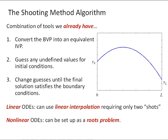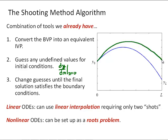Recall that the shooting method algorithm is a combination of tools that we already have. The first step is to convert the boundary value problem into an equivalent initial value problem. Then we're going to guess any undefined values for the initial conditions — often that's going to be guessing dy/dx at x equals 0. We'll take that guess, use an initial value problem solver to integrate the differential equation, and modify our guess until the end of the integration hits the target.